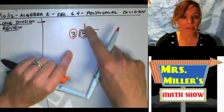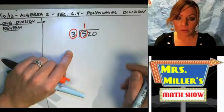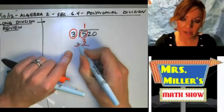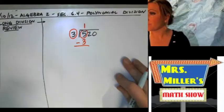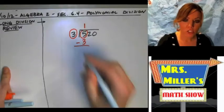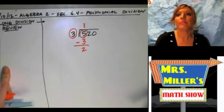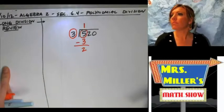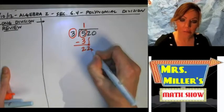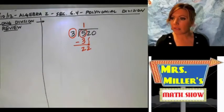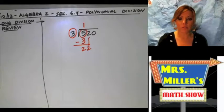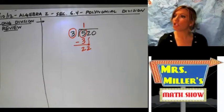Desi answers. Everybody give it up for Desi. So when we subtract — everybody shout it out — what is five minus three? Two. Good. Now what? Thane: carry down the two. Everybody give it up for Thane. Then what? Zach: we see how many times three goes into 22.